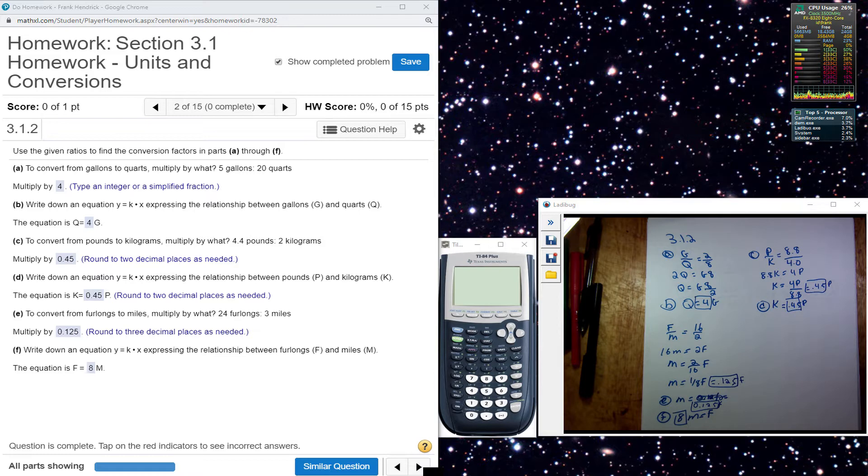For Part A, it asks you to use a given ratio to find the conversion factors of parts A through F. To convert gallons to quarts, multiply by what? I went ahead and set it up left to right with gallons in the numerator and quarts in the denominator. And the ratio set up there, I set up a proportion to get it done.